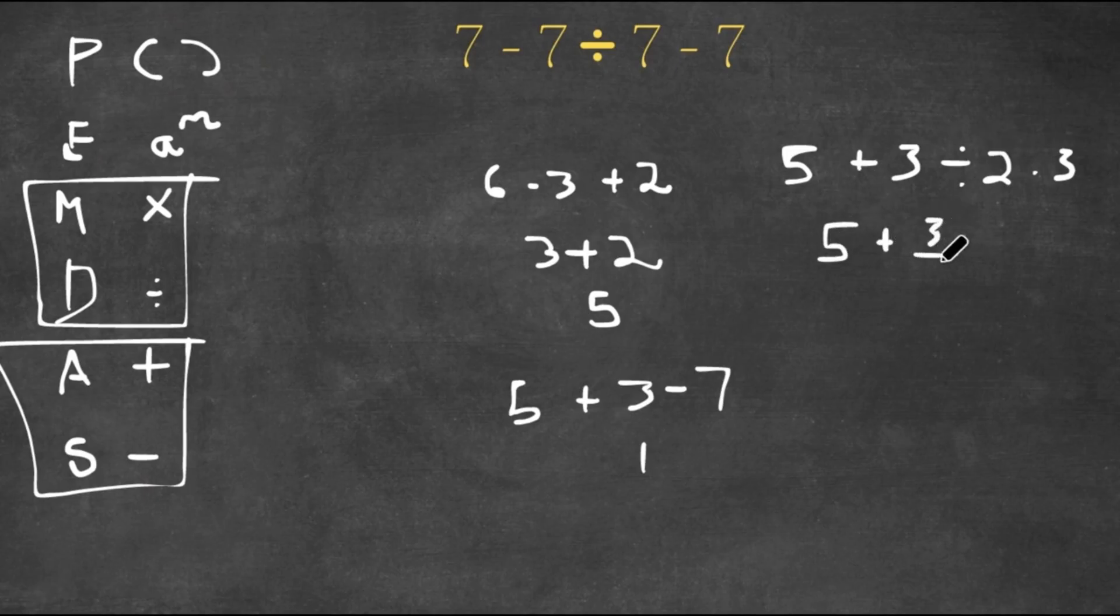As you can see, division comes before the multiplication here, so I would first do 3 divided by 2. So now I have 5 plus 3 over 2 times 3. And now I have multiplication, so now I do 3 over 2 times 3, which is 9 over 2, and then I would add 5.